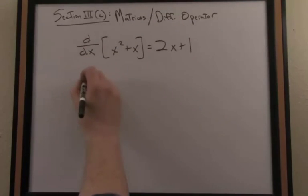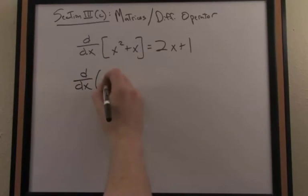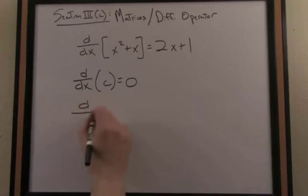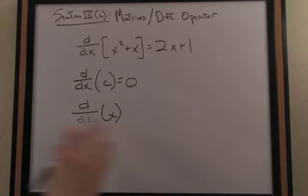So, for instance, what if I consider the derivative of a constant, we'll just call it C. Well, the derivative, as we know from calculus, of a constant is 0. The derivative of x with respect to x, of course, is 1.